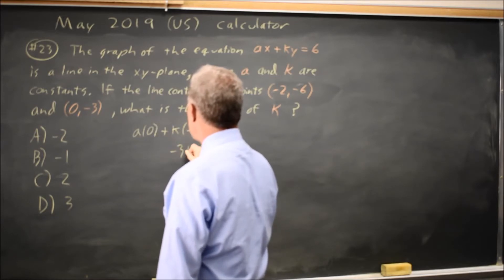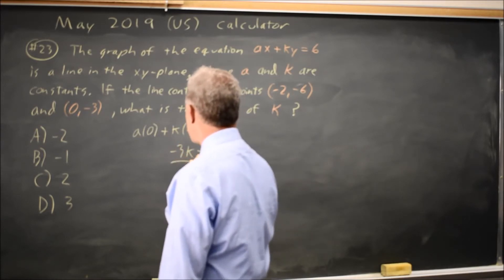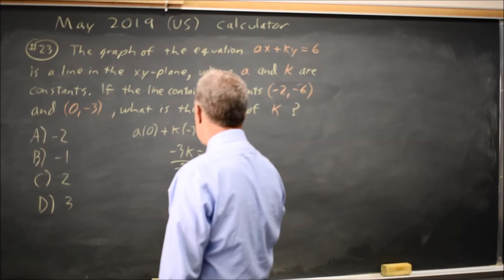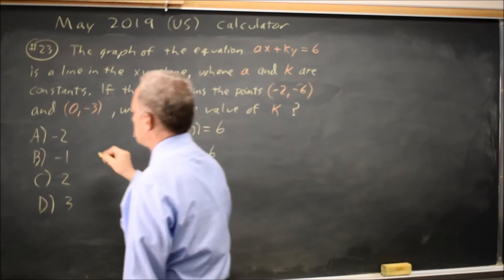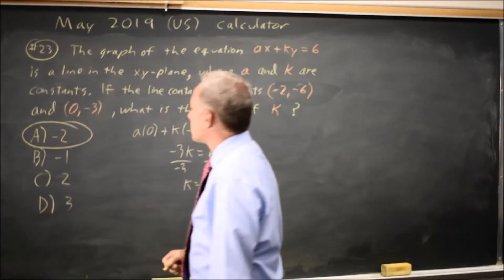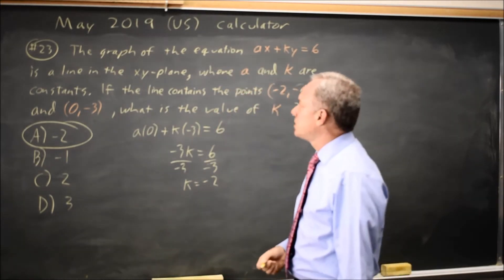so negative 3k equals positive 6. Divide both sides by negative 3, and k equals negative 2. Choice A. I thought I was going to solve a system of equations.